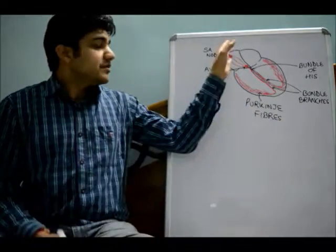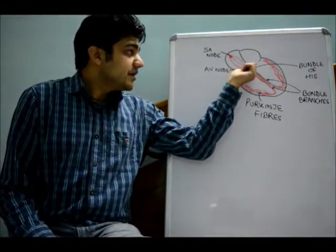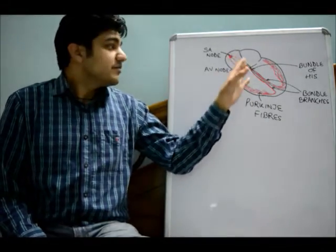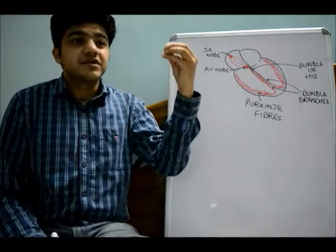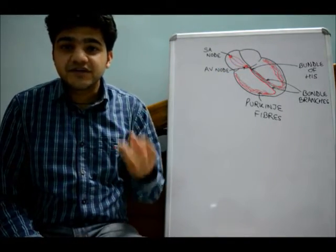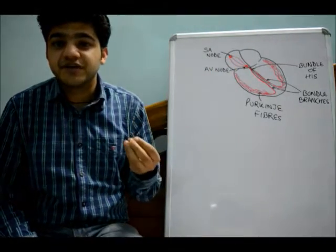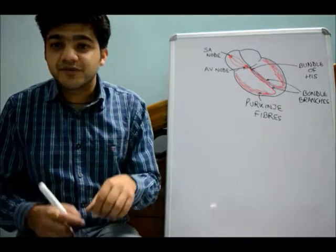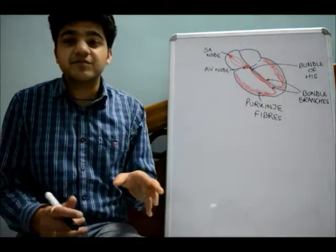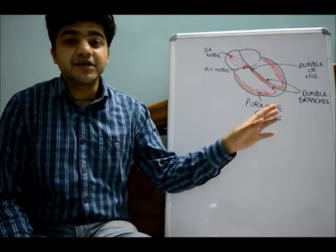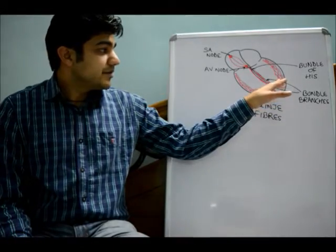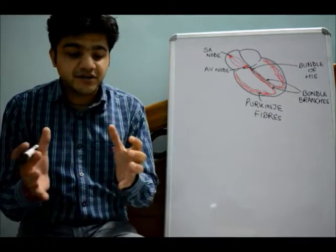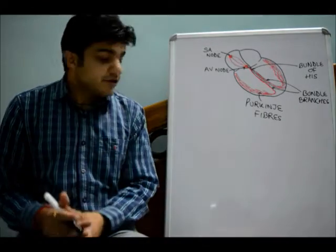So in normal conduction, an impulse starts in the SA node, goes to the atria, then the AV node, bundle of His, and finally the Purkinje fibers. Three things are important: the SA node retains automaticity to maintain the heart's rhythm; the atria beat before the ventricles so the ventricles receive all the blood from the atria; and the Purkinje fibers are very fast conducting fibers that send the impulse across all ventricular muscle simultaneously so the ventricles contract as a unit.